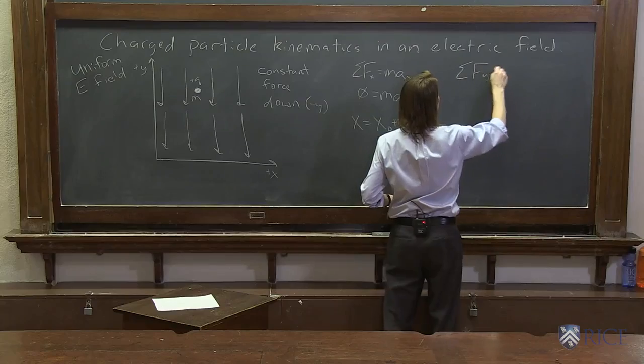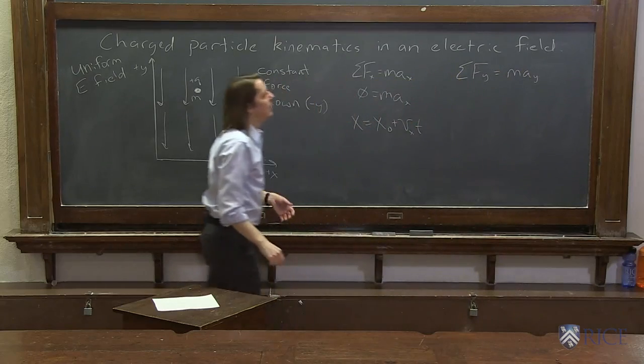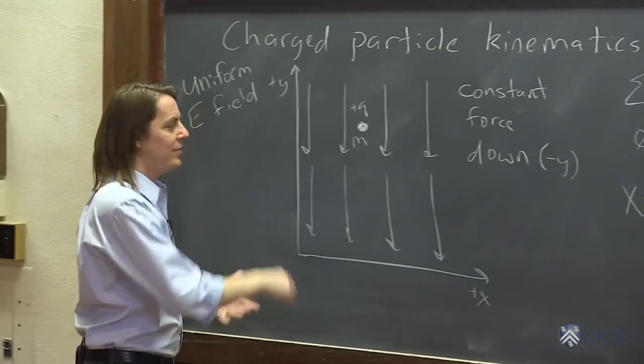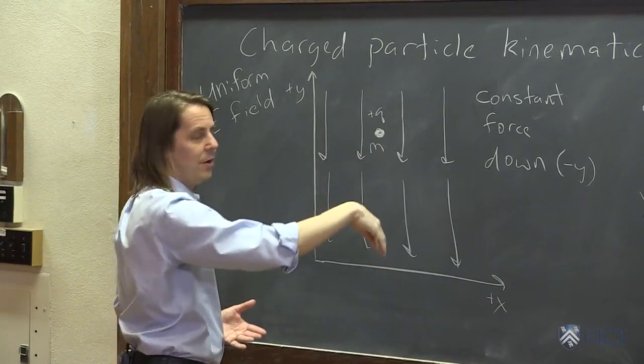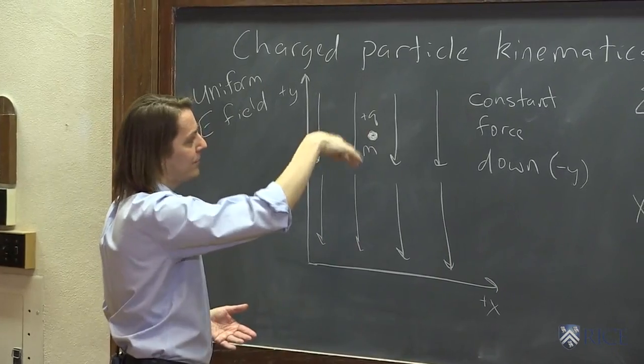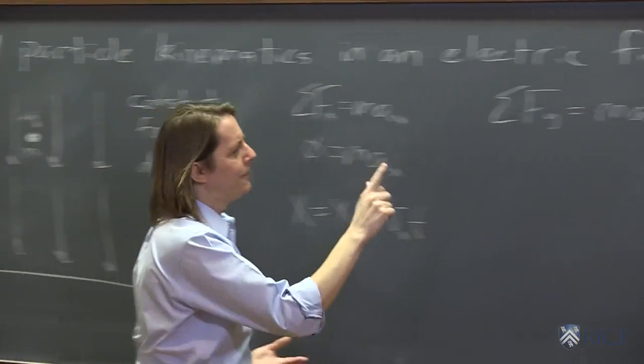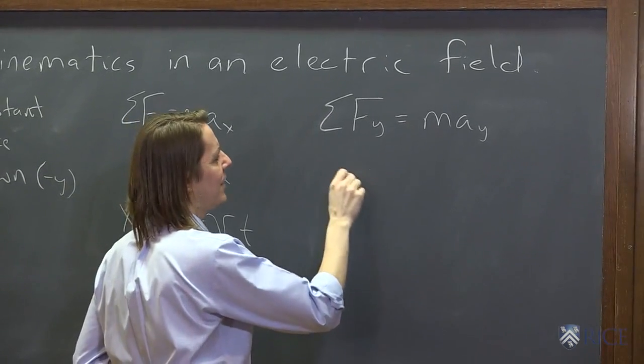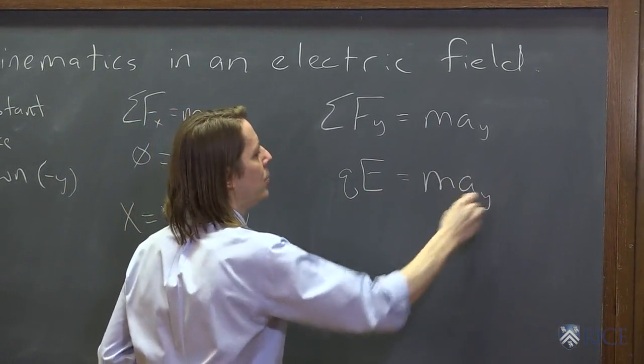And in the y, sum of the forces in the y equals the mass and the acceleration in the y. So this I set up to be a lot like gravity, right? Gravity is a constant force down on a mass. Here, the electrostatic force is a constant force down. So what you're going to get is that the force, in this case, it's qE would be equal to m a y.